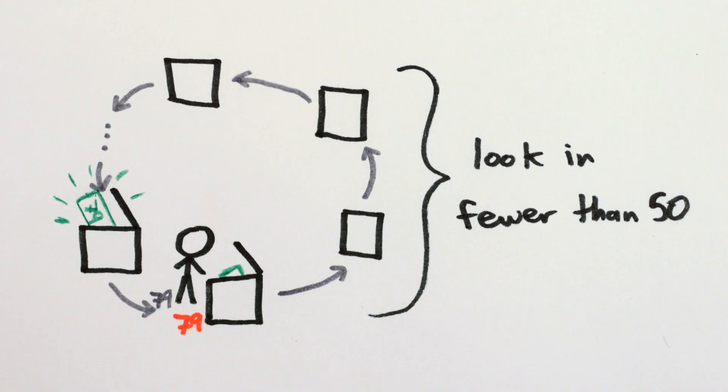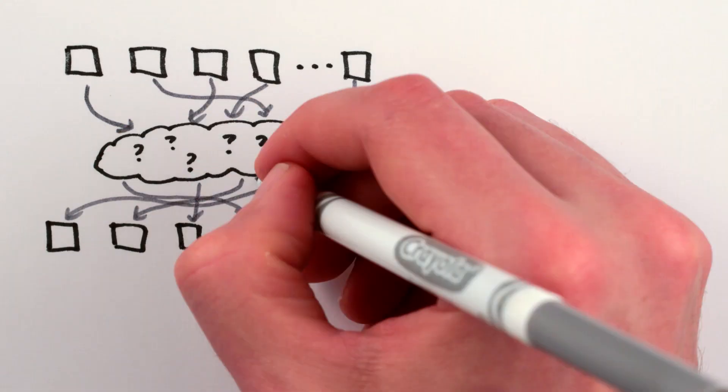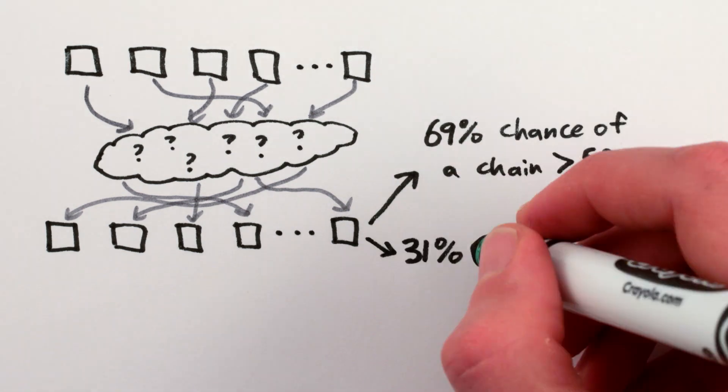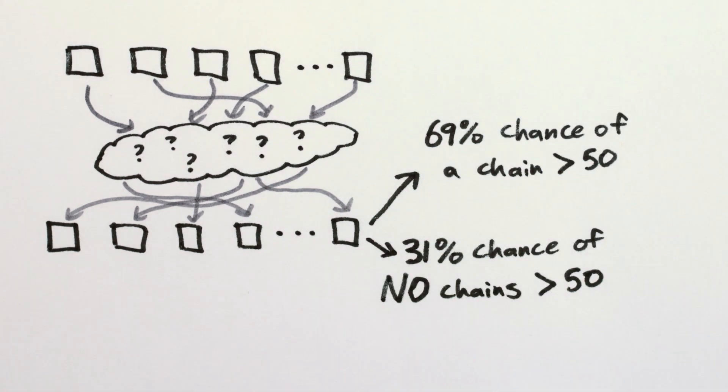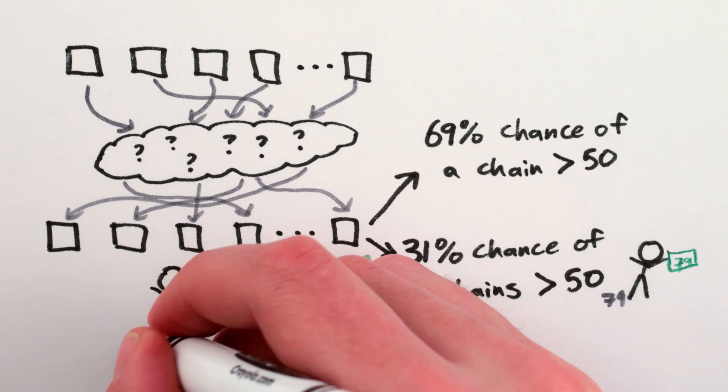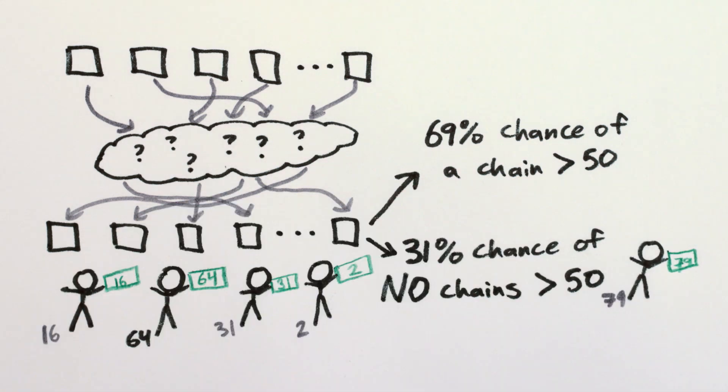And that's why this strategy is so good, because when we rearrange the boxes randomly, about 30% of the time there will be no chains connecting more than 50 boxes. So not only will you win, but so will everyone else, as long as they're following the same strategy.